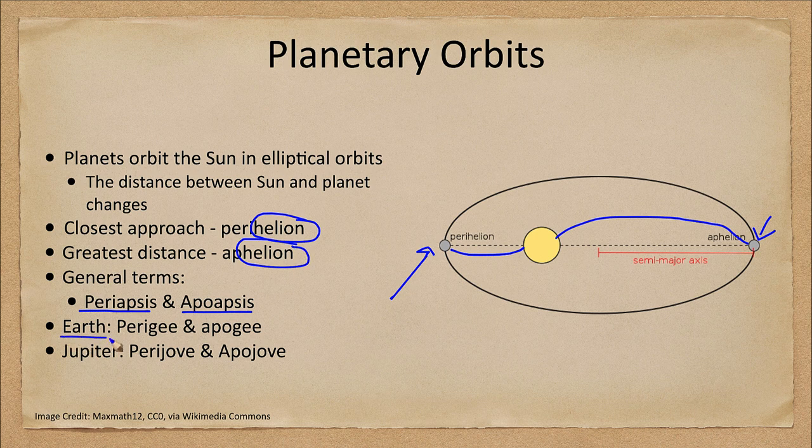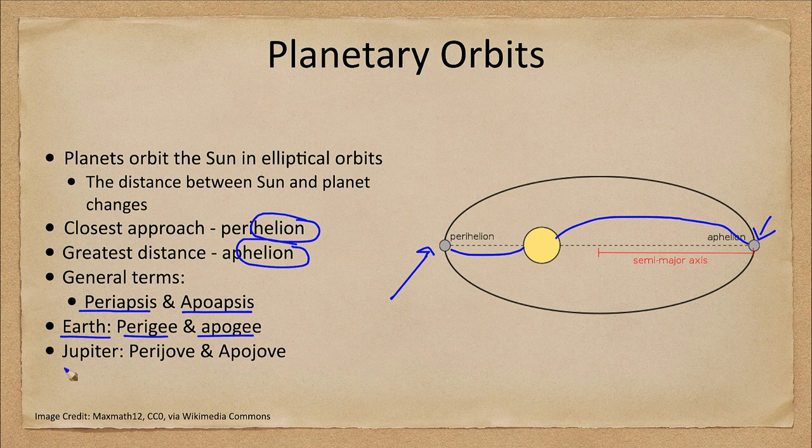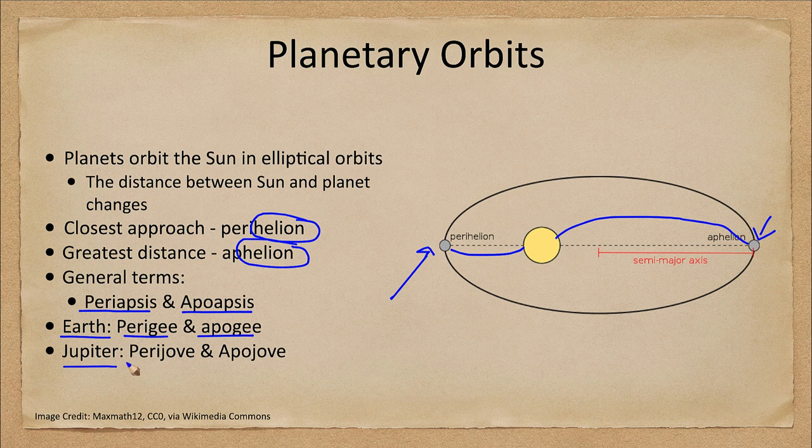When we talk about things orbiting Earth, we use perigee and apogee. Objects orbiting Jupiter, such as the Juno spacecraft, will have a perijove and an apojove.